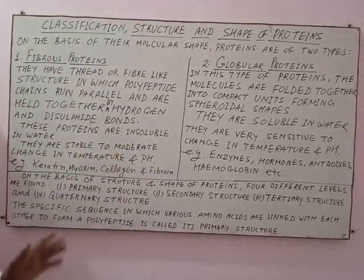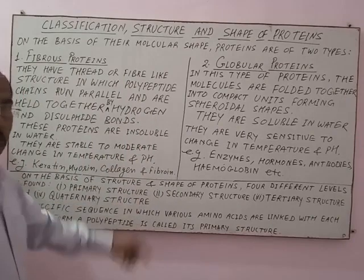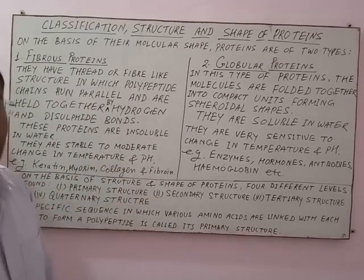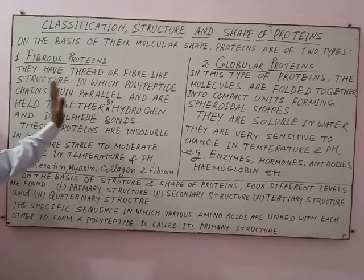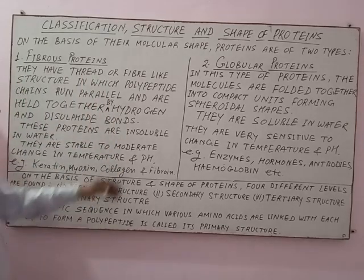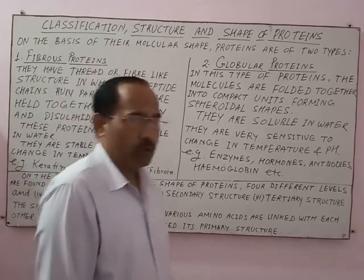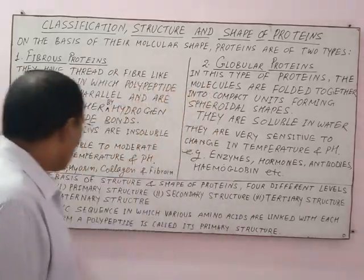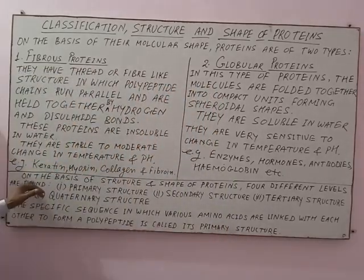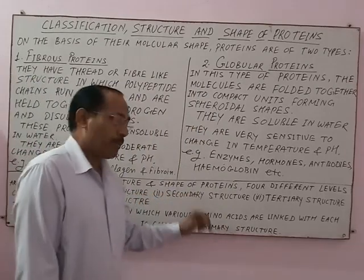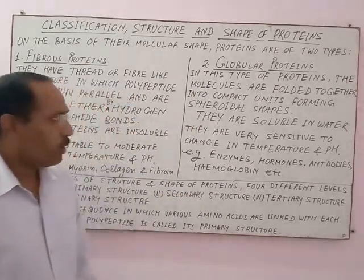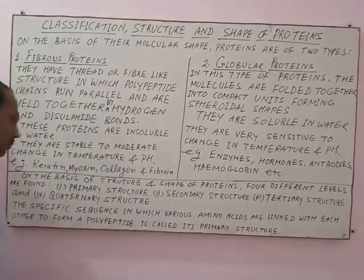This is all about the classification of proteins on the basis of shape — fibrous proteins and globular proteins. Now, regarding the structure and shape of proteins, four different structural levels are found.